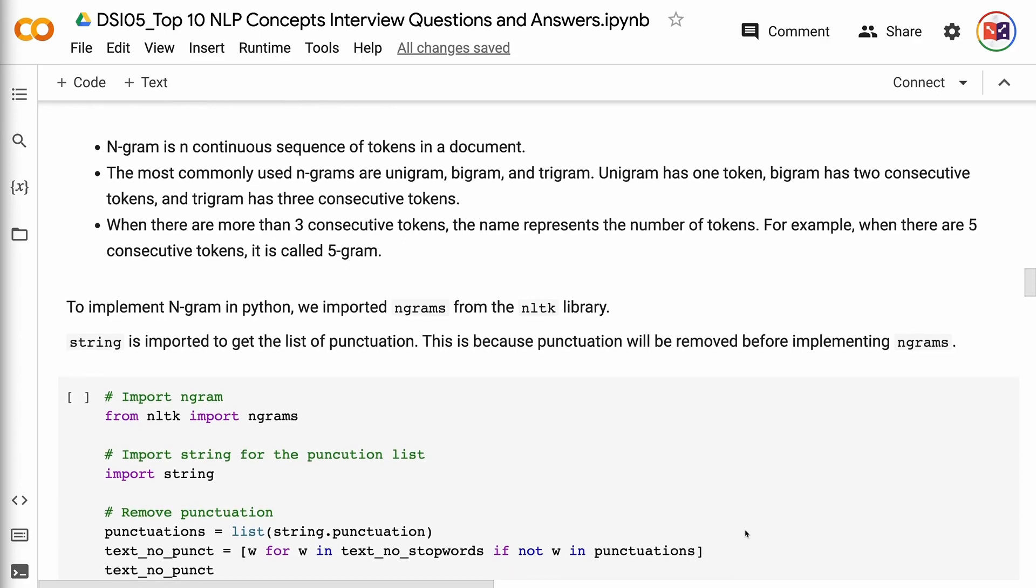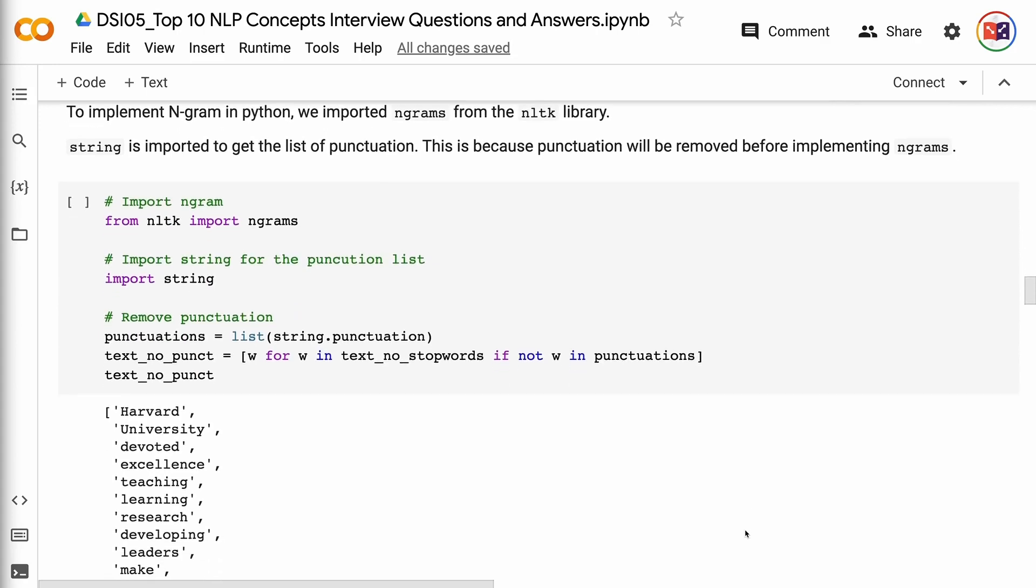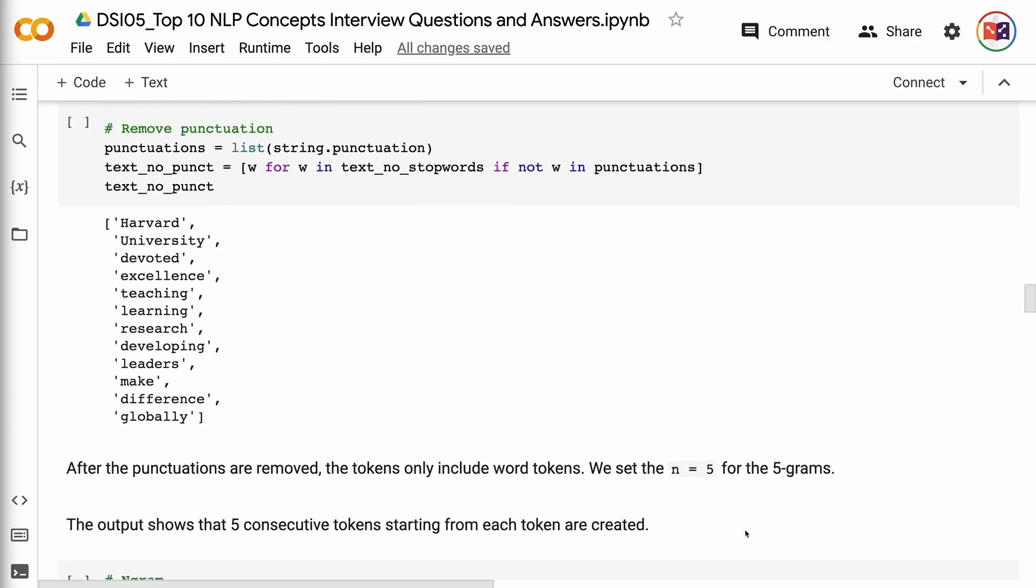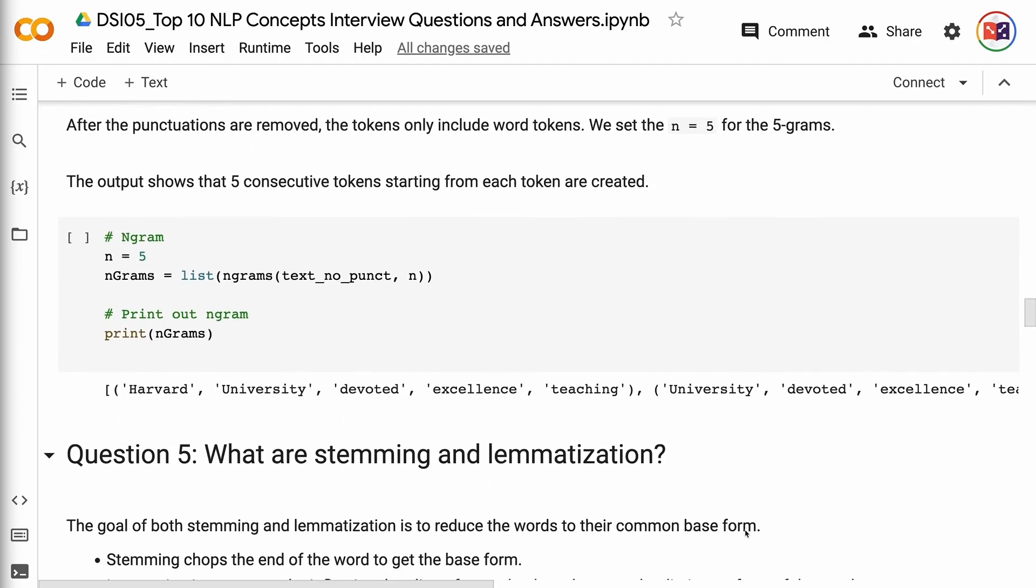To implement N-gram in Python, we import Ngrams from the NLTK library. String is imported to get the list of punctuation. This is because punctuation will be removed before implementing N-grams. After the punctuations are removed, the tokens only include word tokens. We set N equals 5 for the 5-grams. The output shows that five consecutive tokens starting from each token are created.